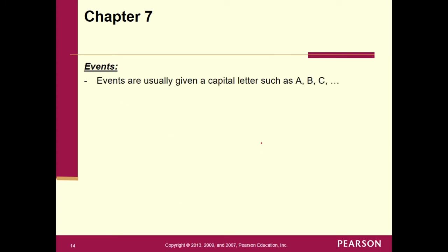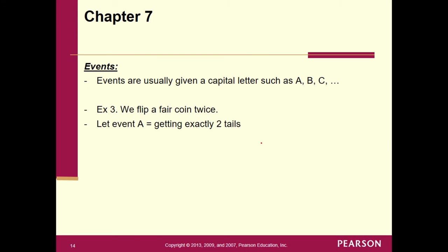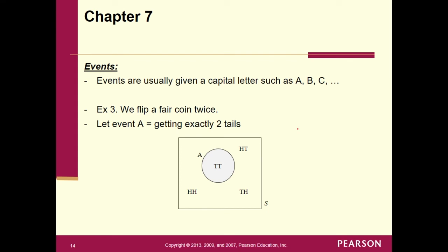Events are usually given a capital letter such as A, B, or C. For example, if we flip a fair coin twice and define event A as getting exactly two tails, we draw our sample space box with the four outcomes and draw a circle around TT to represent event A. This is what we call a Venn diagram, and it will help us quite a bit as we move through this chapter.